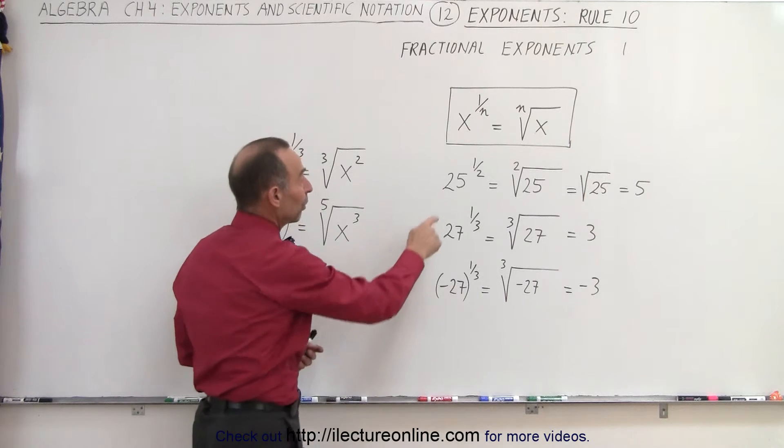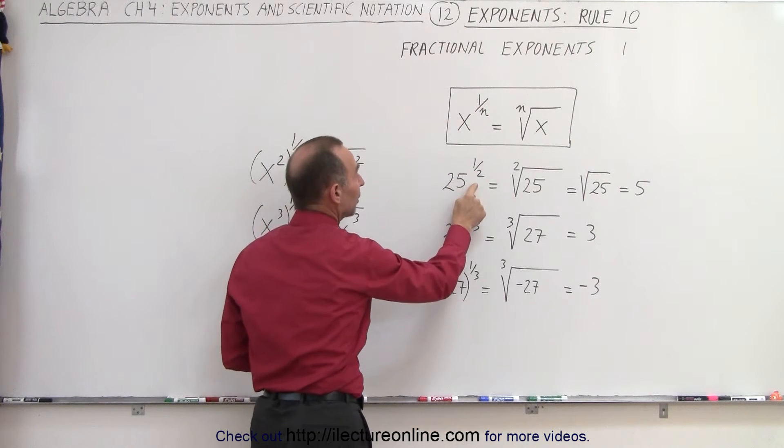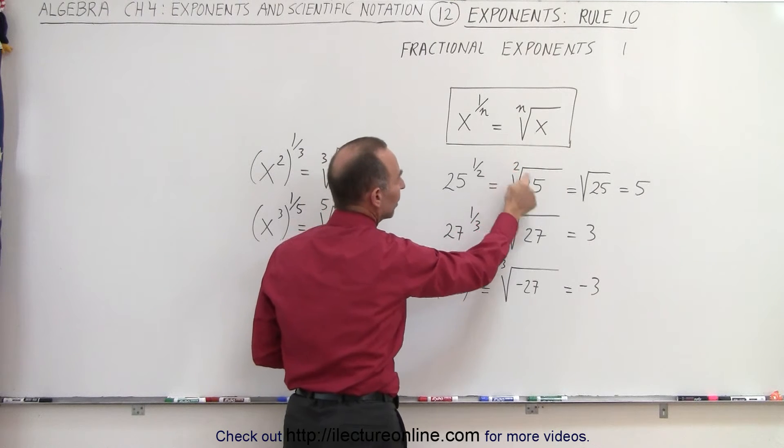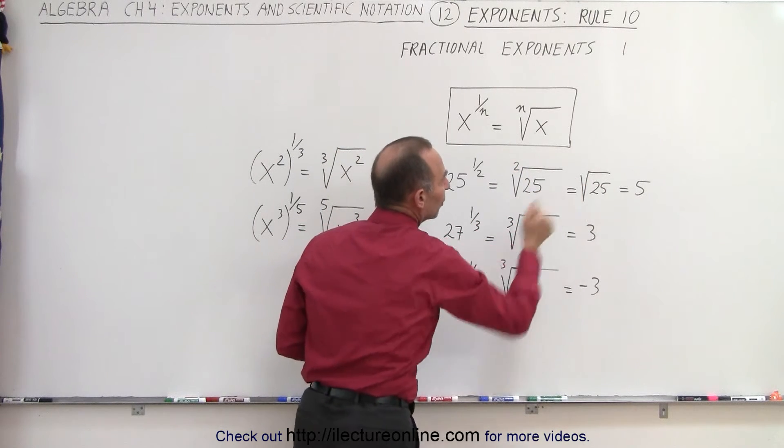As an example, 25 raised to the 1 half power is equal to the square root of 25. We don't need to write the little 2 there. We can simply write it like this, which is equal to 5.